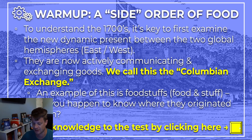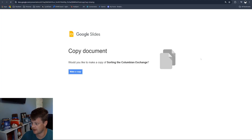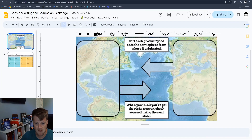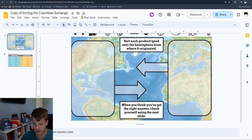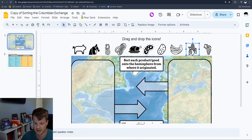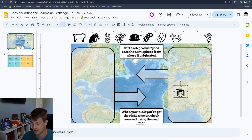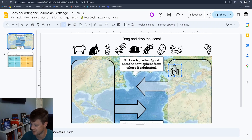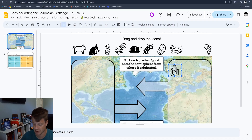Here's a fun activity to get the juices flowing. Click the yellow square at the bottom and make a copy of this activity. Then sort each product or good onto the hemisphere where it originated. When you think you have the right answer, check yourself using the next slide. There are about 10 products here. For example, did corn start in the Western hemisphere and then migrate to the Eastern hemisphere? Take five minutes, make your guesses — you might know some off the top of your head. Click on slide two to check your answers.